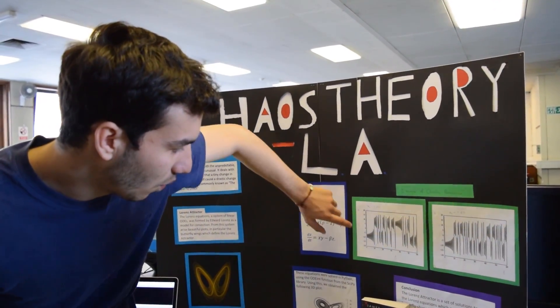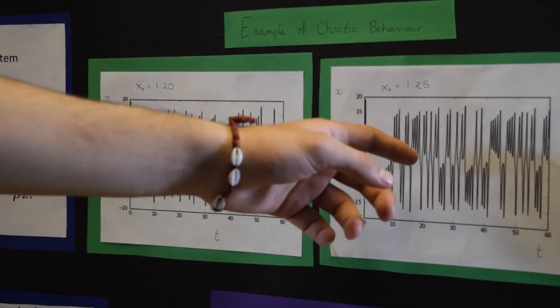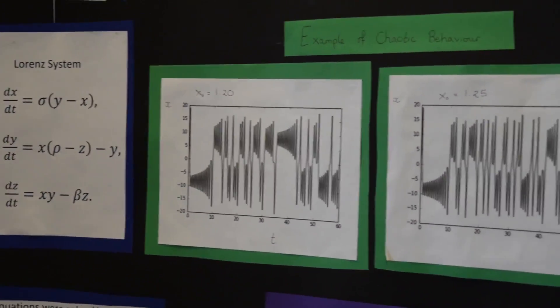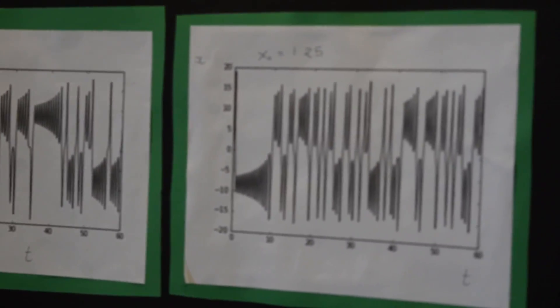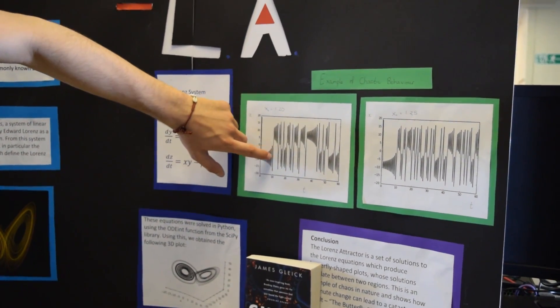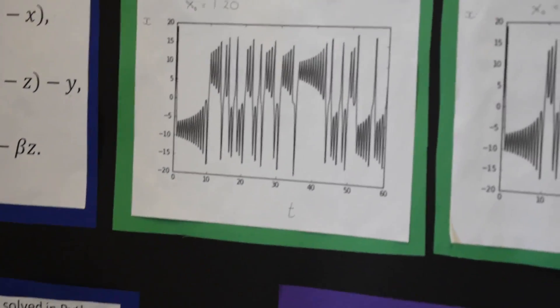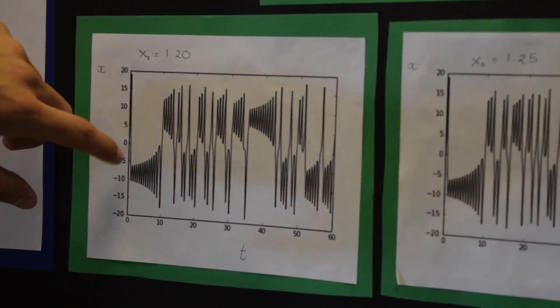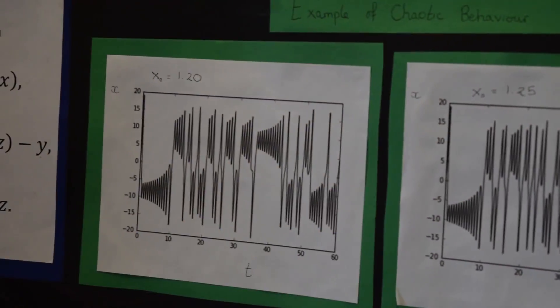So here we've got an example of the X dependence against time. For this plot, we chose an initial value of 1.2 for X, just arbitrarily. And for the next value, we just altered that by 0.05 to see if a very slight change in the system would actually yield a big difference in the outcome. And as we can see, it actually does. So only this little bit at the beginning is constant, which is why weather prediction is only accurate to a couple of days maximum.